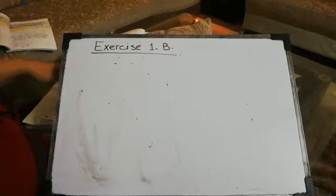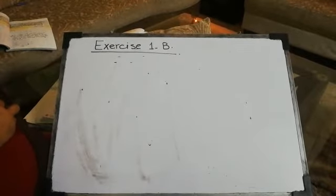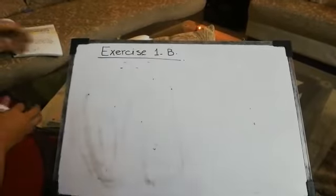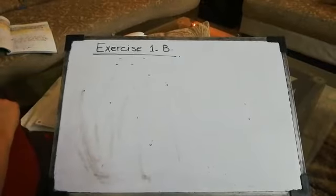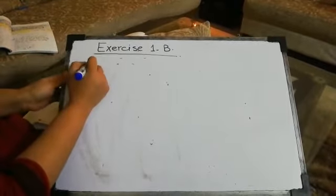LCM is the lowest common multiple and HCF is the highest common factor. Because you are already done with the basic level, today I'm going to tell you how to exactly find out the highest common factors, as our first question asks us to find the highest common factors of each of the following sets of numbers.